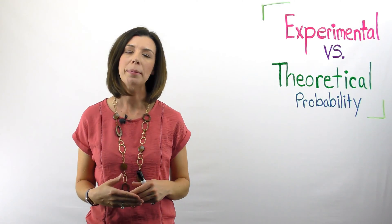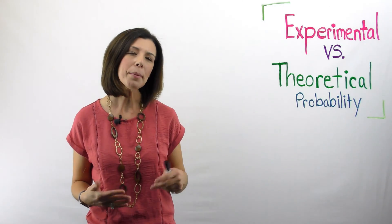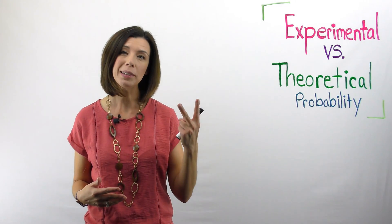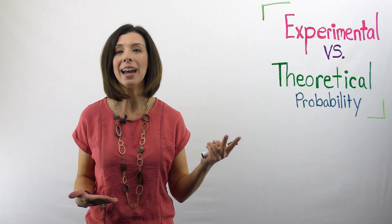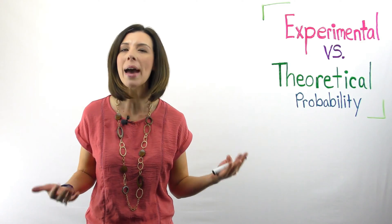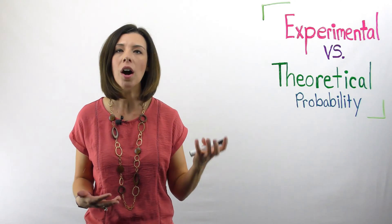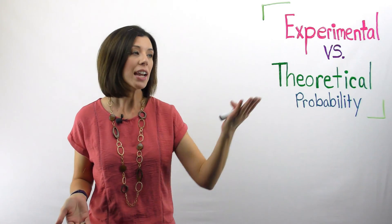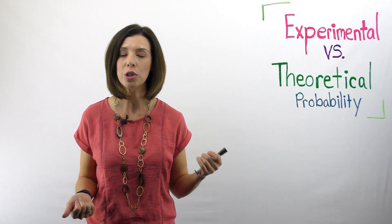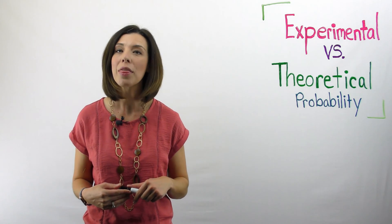When I think about theoretical probability, this is probably the one that you're most familiar with. Think about if I say, what's the probability of flipping heads on a normal two-sided coin? There are two possibilities — heads and tails. The probability of choosing heads would be one out of two. Theoretical probability is based on the math — it's based on the outcomes you can actually see on the coin. Technically, I have a theoretical probability of getting heads one out of two times. Theoretical probability is what is expected to happen based on the math.